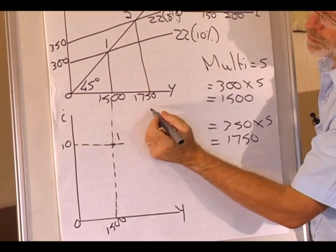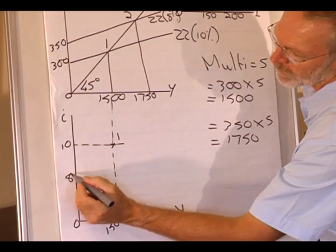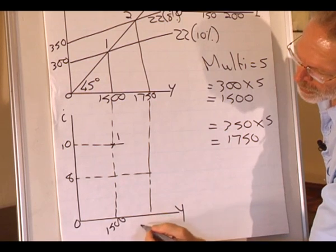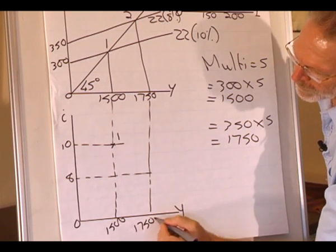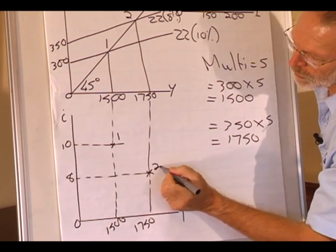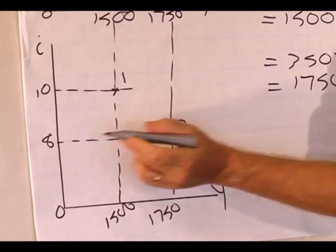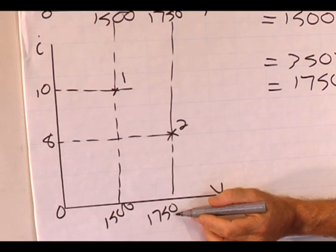So on our bottom diagram, an interest rate of 8% corresponds with an equilibrium level of production of 1750. So point 2 represents equilibrium in the goods market for a given interest rate of 8% and level of production 1750.